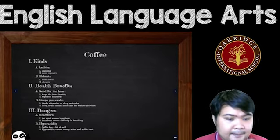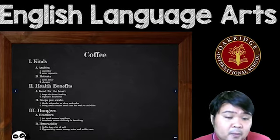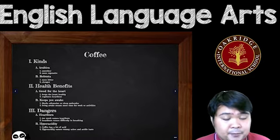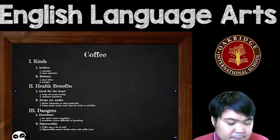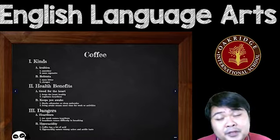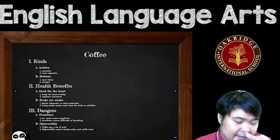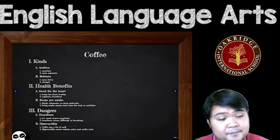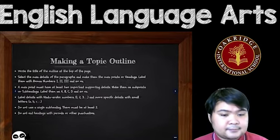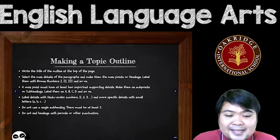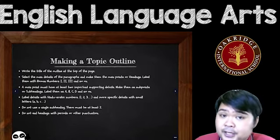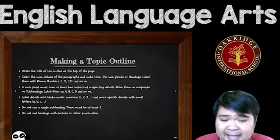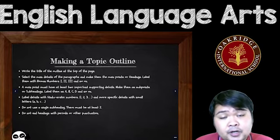Going back to the example: under 'kinds' there's Arabica, and under Arabica there's 'smoother.' You could go even more specific — like 'it feels smooth to your mouth, to your tongue, to your esophagus, down to your stomach.' Do not use a single subheading — there should be at least two. And do not end headings with periods or other punctuation marks.